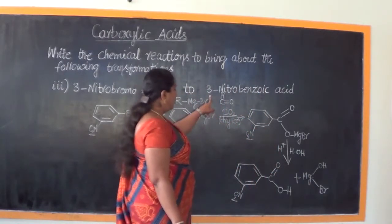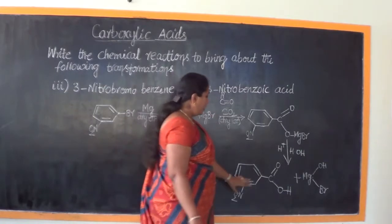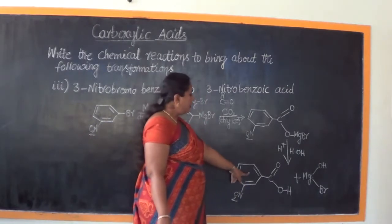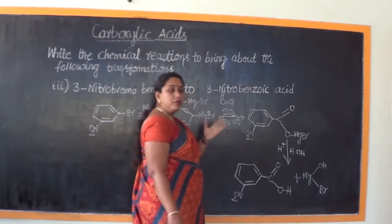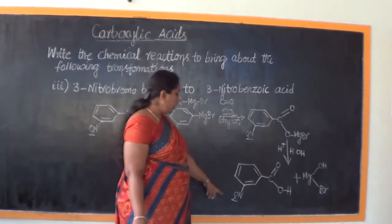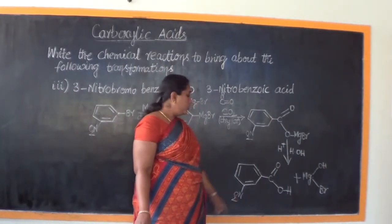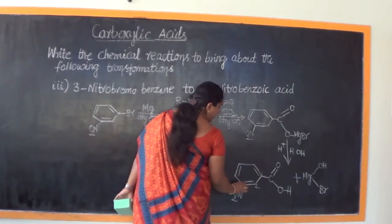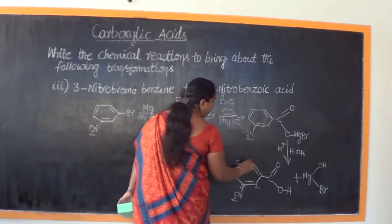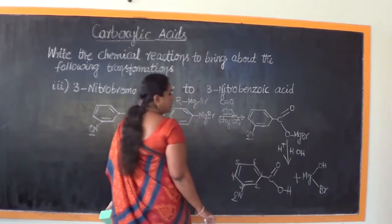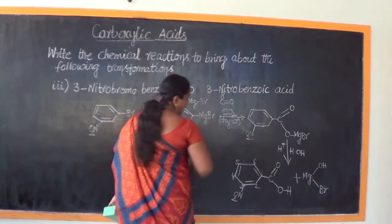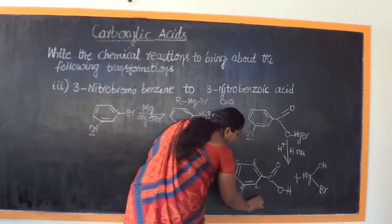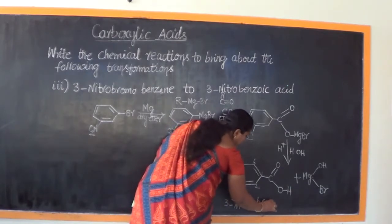What is the name of this compound? C₆H₅COOH is benzoic acid. From the phenyl group (C₆H₅), one more hydrogen has gone and the nitro group is linked at the third carbon — first, second, third, fourth, fifth, and sixth carbon atoms. Therefore the name of this compound is 3-nitrobenzoic acid.